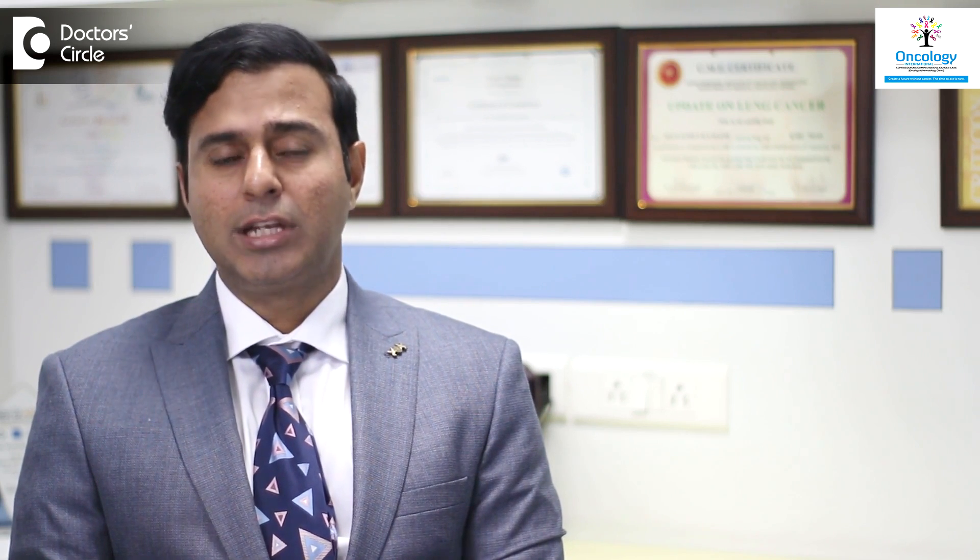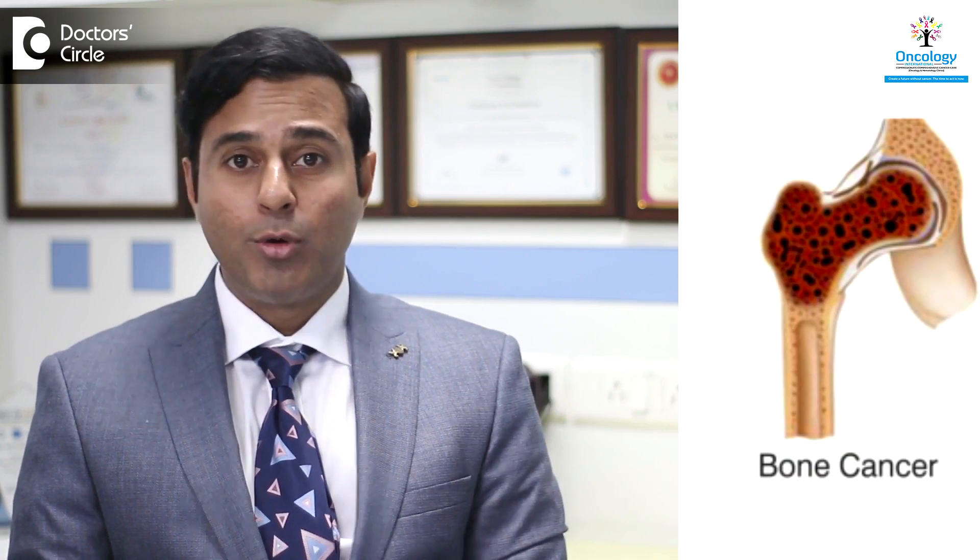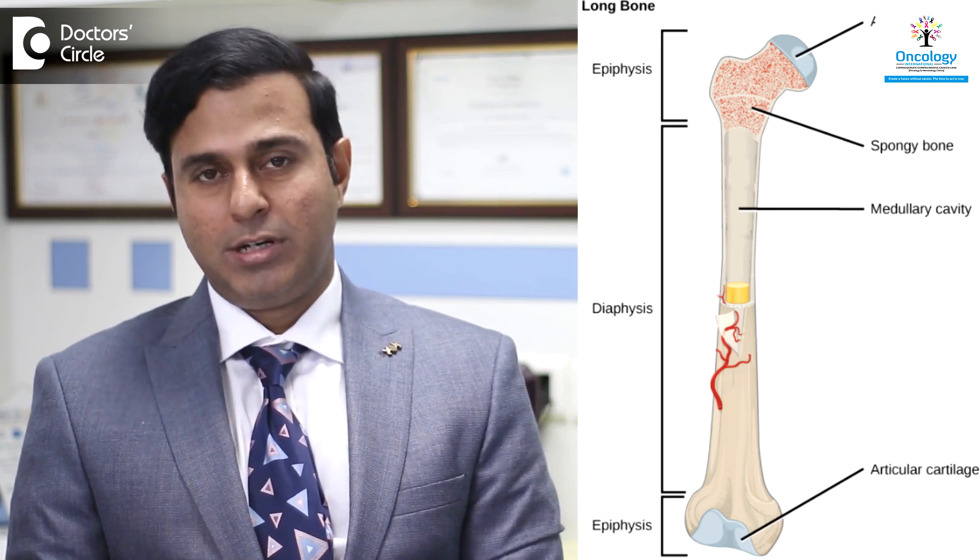Just like every organ has several parts, a bone also has several parts. If you look at a long bone — for example the bone of our thigh, otherwise called the femur — it has three components: the diaphysis or the middle of the bone, the epiphysis or the tip of the bone, and the bridging part between the epiphysis and the diaphysis called the metaphysis.